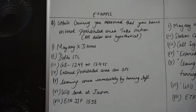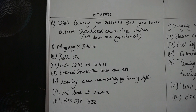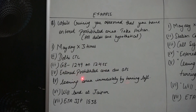Here is an example — all data are hypothetical. The condition is: while cruising, you observe that you have entered a Prohibited Area; take action. Using hypothetical call sign and station: Mayday, Mayday, Mayday — Delhi Control — Go Air 1249 on 124 decimal 55 — entered Prohibited Area due to GPS — leaving area immediately by turning left — will land at Jaipur — ETA Juliet Juliet Papa 1538.